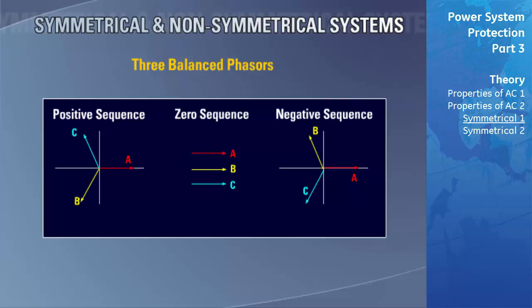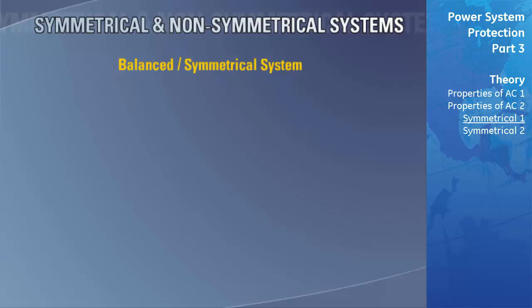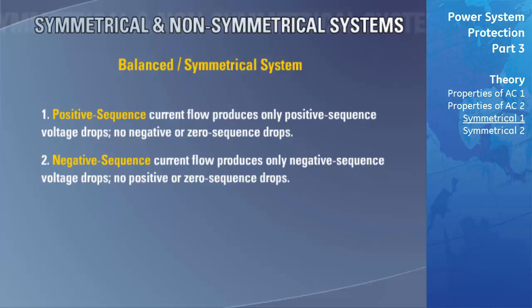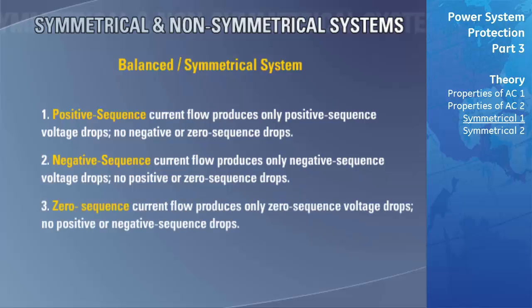Most microprocessor-based relays operate on symmetrical component quantities. According to Fortescue's methodology, a three-phase system has three sets of components — positive, negative, and zero — for both current and voltage, and they are independent of each other. Positive sequence has a phase rotation of ABC, consisting of equal-magnitude phasors displaced 120 degrees apart, rotating counterclockwise. Negative sequence has rotation ACB. Zero sequence phasors have the same magnitude and are in phase with each other with no rotation sequence. In a balanced system, positive sequence currents produce only positive sequence voltage drops, and likewise for negative and zero sequence.